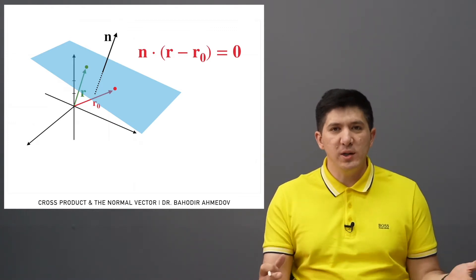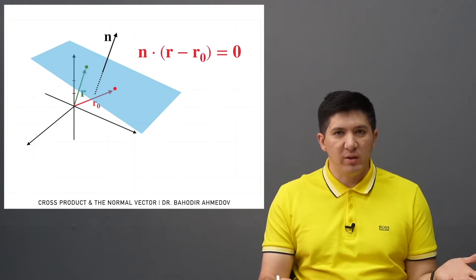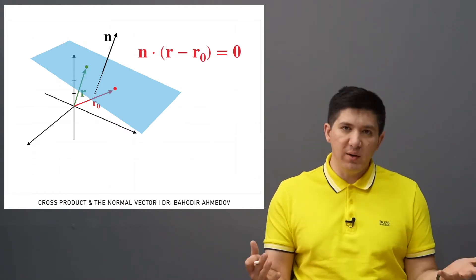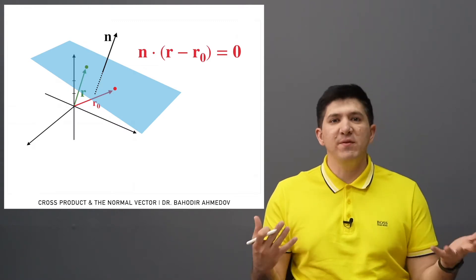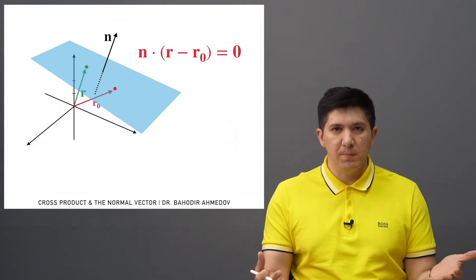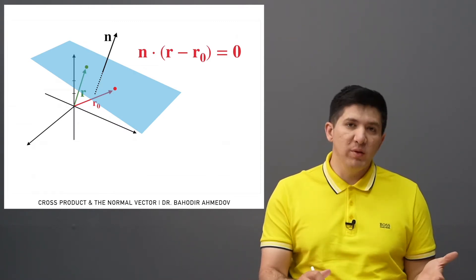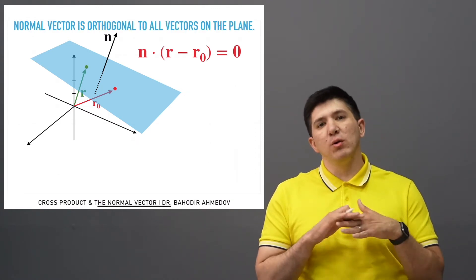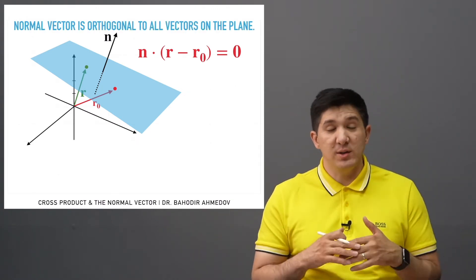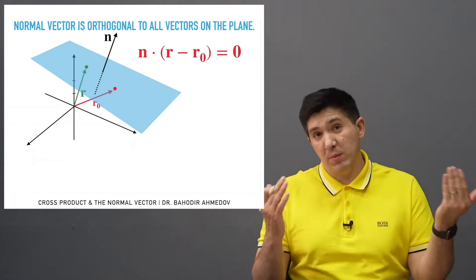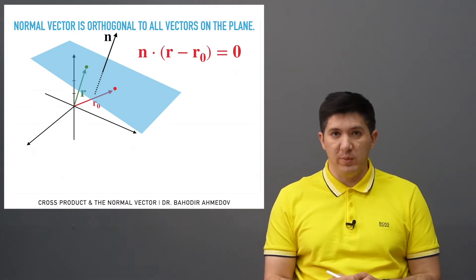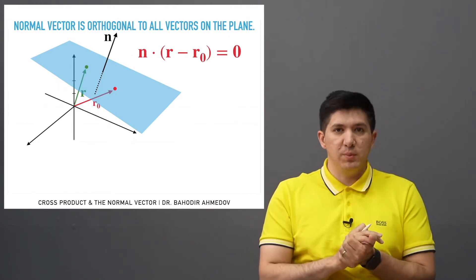The main question is: what is the normal vector? By definition, the normal vector is a vector which is orthogonal to all of the vectors on this plane — essentially perpendicular to the plane, which implies that it is orthogonal to all vectors on this plane.